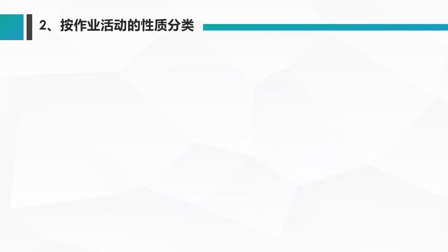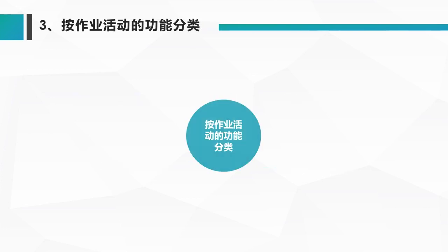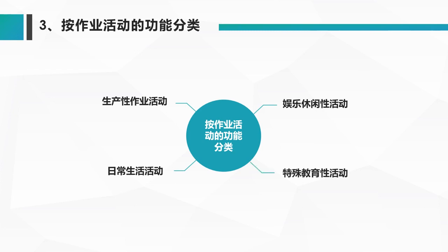按作业活动的性质分类，分成功能性作业、心理和精神性作业活动、儿童作业活动、老年人作业活动。按作业活动的功能分类，分成日常生活活动、具有生产性和作业性的活动，以及娱乐性、休闲性活动、特殊教育性活动。